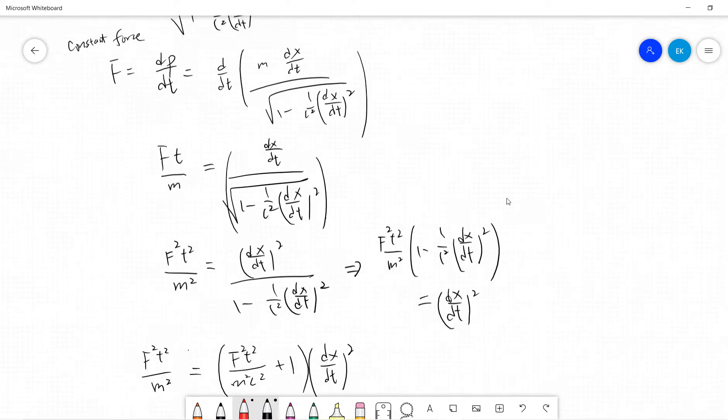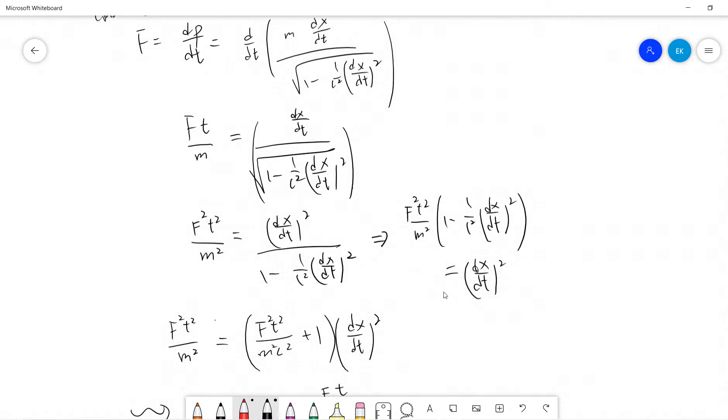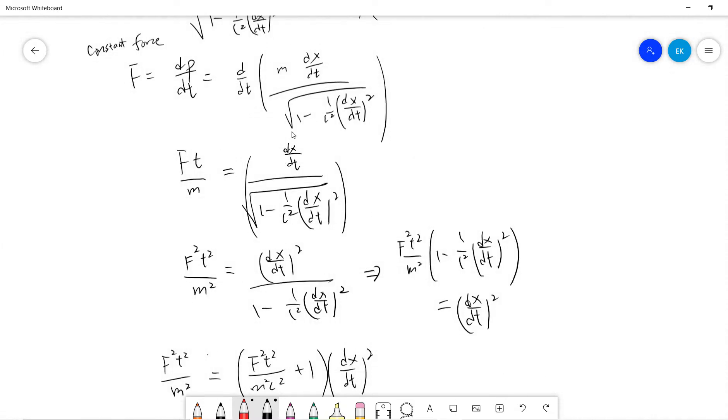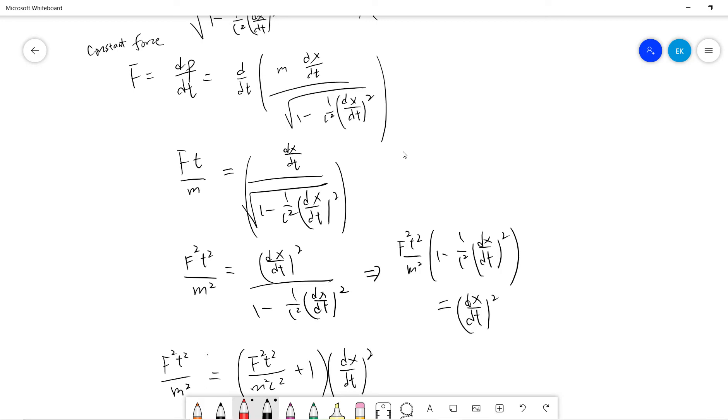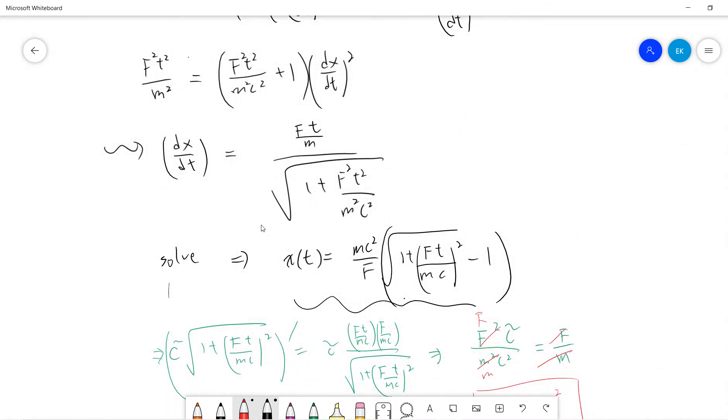So yeah, in special relativity, constant force calculation is very easy, just similar to constant force classical. The only difference is that you count this gamma factor, so somehow you need to write it as this. And the difficult part is that you need to do this integral, but luckily this integral can be done.